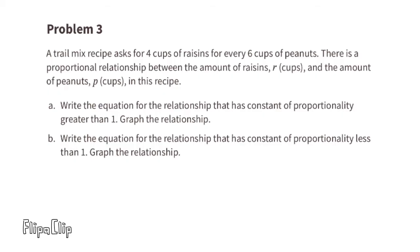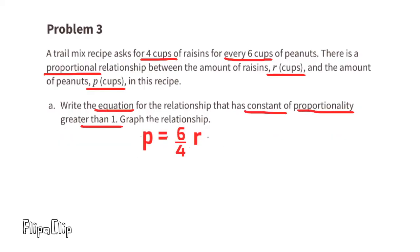Problem number three: a trail mix recipe asks for four cups of raisins for every six cups of peanuts. There is a proportional relationship between the amount of raisins (R cups) and the amount of peanuts (P cups). Part A: write the equation for the relationship that has a constant of proportionality greater than one and graph the relationship. The amount of peanuts equals 6/4 times the amount of raisins, so the equation is P = (6/4)R.